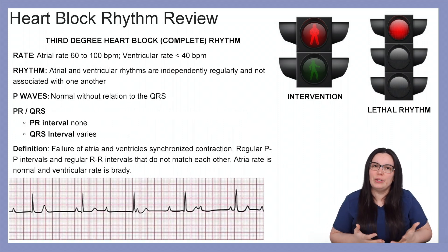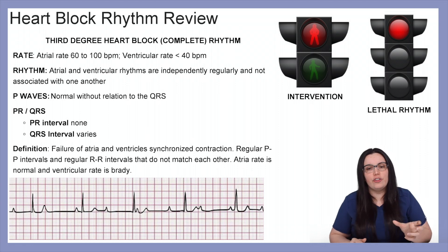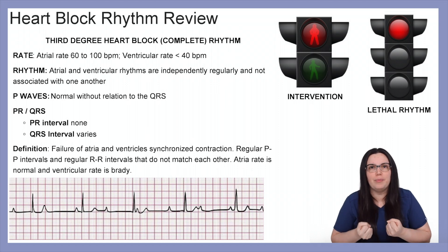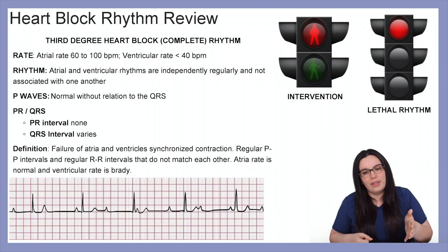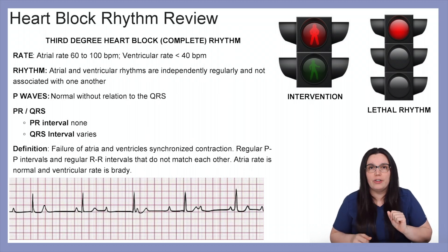Lastly, we're moving on to third degree complete heart block — this is not a very good rhythm. The rate is usually different between the atria and the ventricles: the atrial rate will be between 60 to 100 beats per minute, but the ventricular rate is going to be less than 40 beats per minute. The ventricles push blood out to the body, so if we can't push that blood out effectively because of that slow rate, it doesn't matter what the atria is doing. The atrial and ventricular rhythms are independently regular and are not associated with one another — your R-to-R will be regular and your P-to-P will be regular, but they won't be communicating with each other.